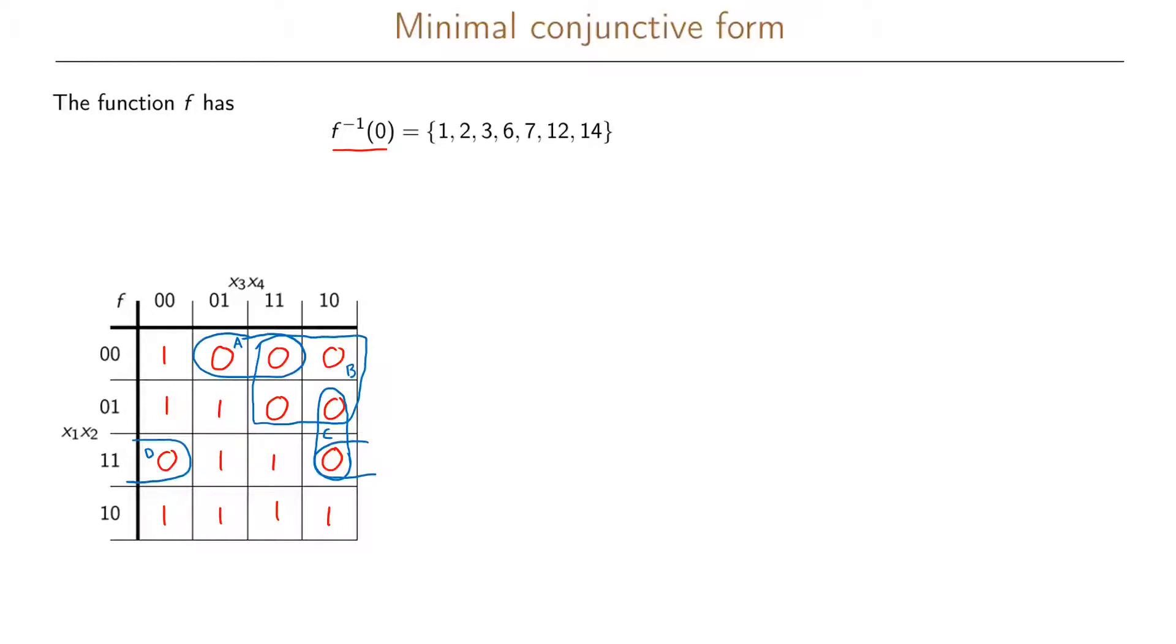Note that what we have made in our boxes here are not implicants or prime implicants because by definition the implicants are covering ones and don't care terms in our Karnaugh map. Now we're covering zeros, so these are actually the dual of our implicants. So let us write this dual of the implicants.